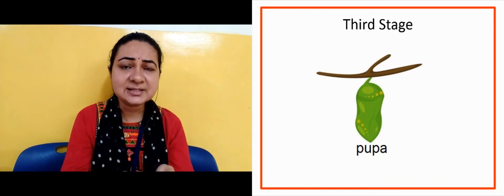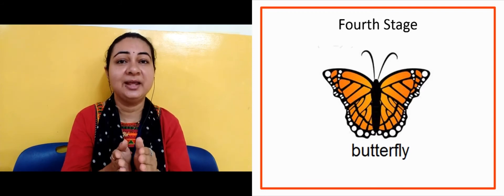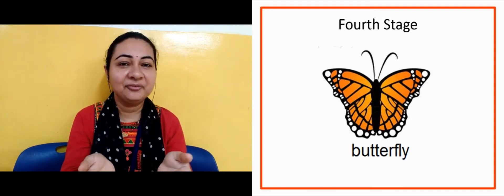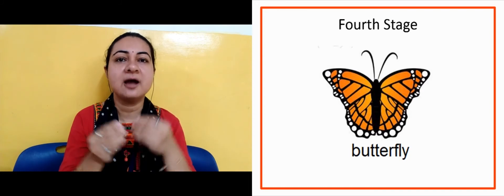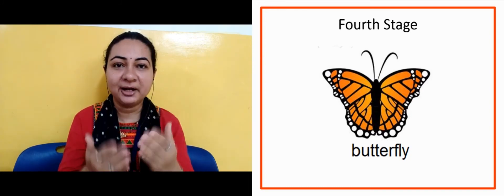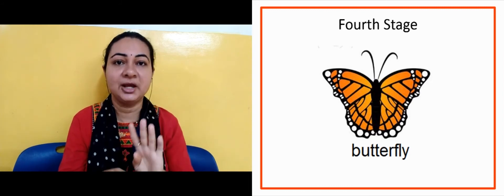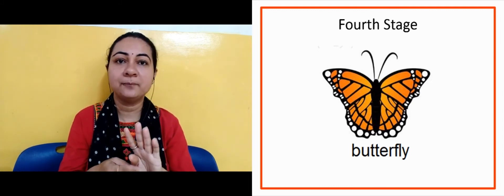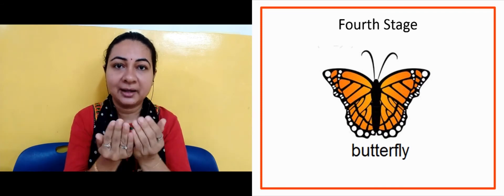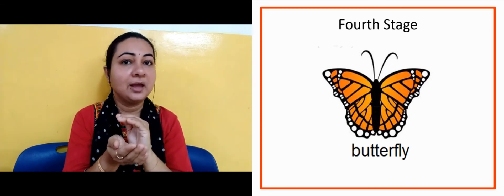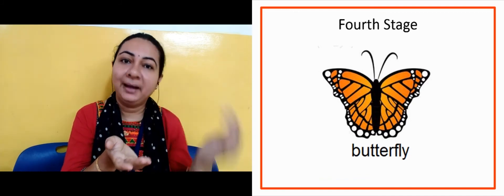In the next slide we can see the butterfly. How colorful the butterflies are! This is the fourth stage. What happened to the caterpillar? It became a butterfly. The fourth stage is butterfly.